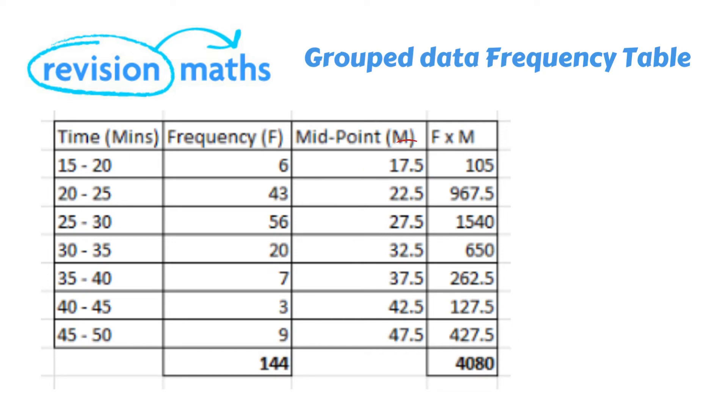To calculate the estimated number of minutes the runners were running we times the frequency by the midpoint. We then add up all the right hand column to give us a total estimated number of minutes that were ran which equals 4080 minutes.